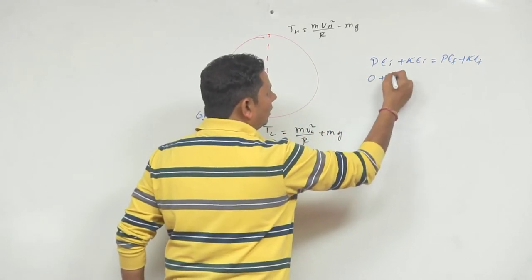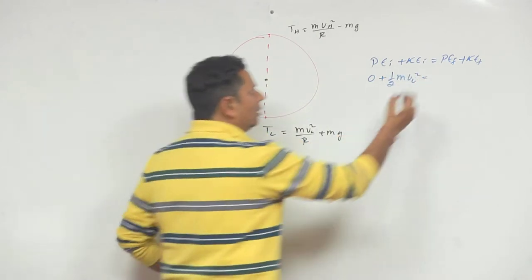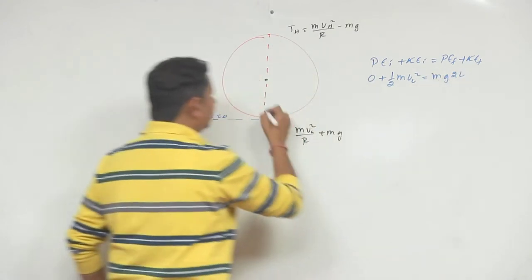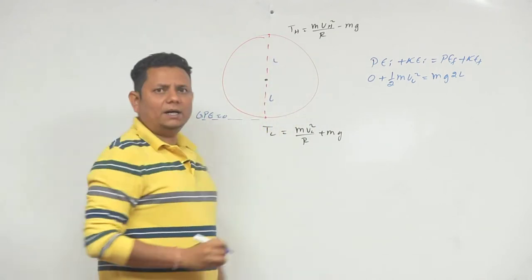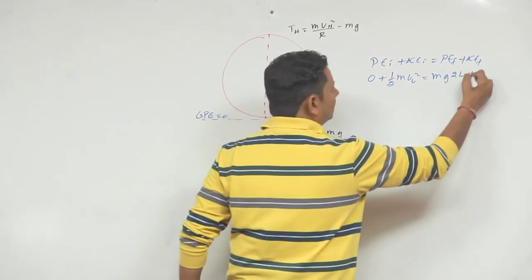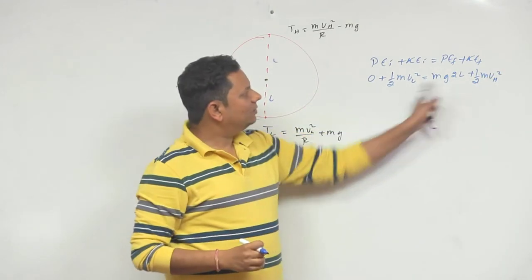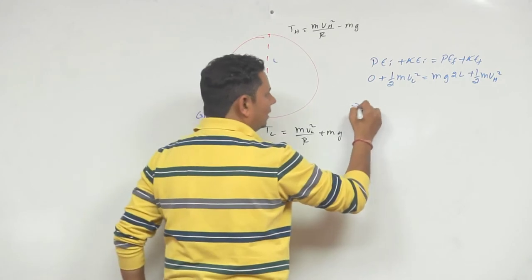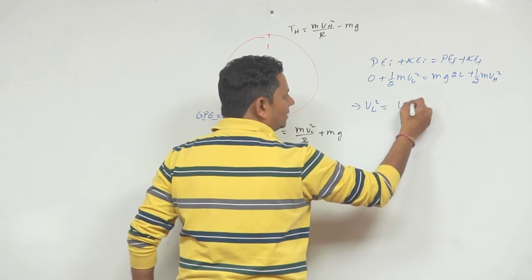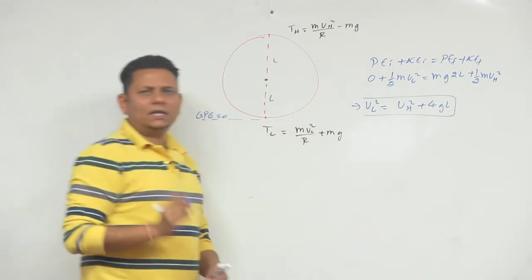Gravitational potential energy को lowest point पर 0 मानें। तो initial energy = ½mv²_L। Final energy = mg(2L) + ½mv²_H, क्योंकि highest point तक particle ने 2L distance travel किया। m cancel करके और multiply करने पर relation मिलता है: V²_L = V²_H + 4gL। यह एक important equation है।